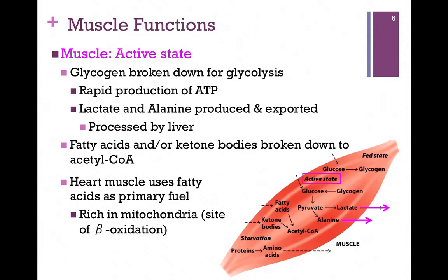Fatty acids or ketone bodies can be broken down to acetyl-CoA. The heart muscle is special in that it uses fatty acids as its primary fuel. For this reason, the heart is rich in mitochondria — remember, that's the site of beta-oxidation. For a muscle like the heart that must work continuously without fail, it's important that it has a very rich energy source, so it's very logical that it would use fatty acids as its primary fuel.